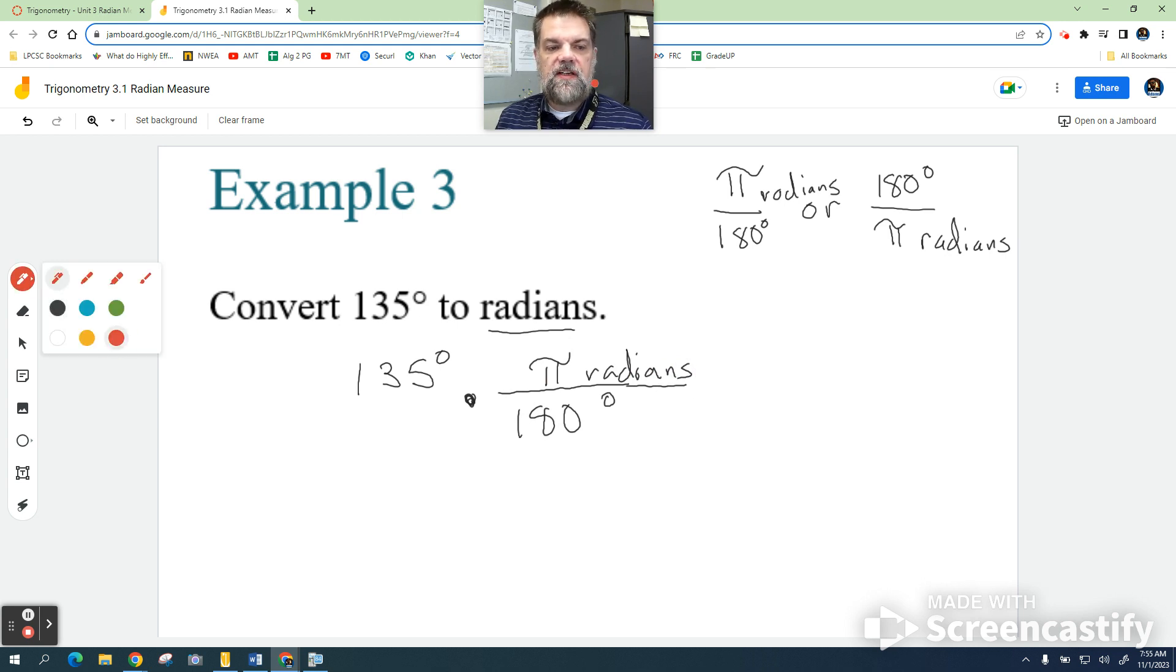Well, essentially, degrees divided by degrees is just one. So then, if I do the math on this, I'm just going to say 135 times pi divided by 180.